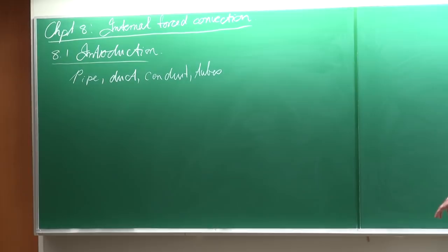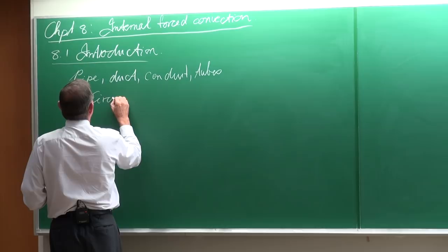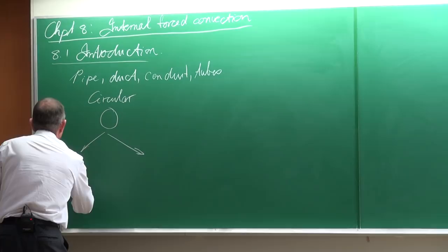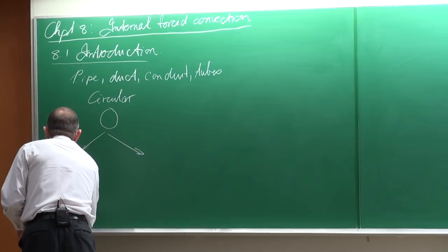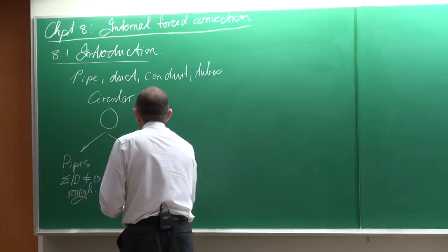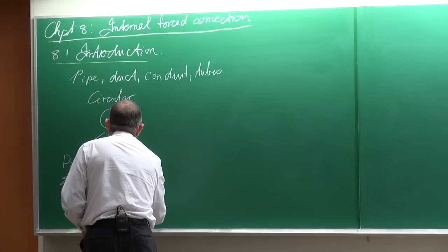Normally, in some literature, if it is circular in dimension, then — and this is actually the correct nomenclature — it will be called a pipe if epsilon over D is not equal to zero, meaning it is actually a rough tube. If it is a tube, then epsilon divided by D would be equal to zero, so that would be smooth.